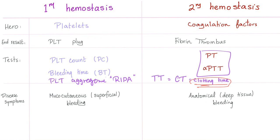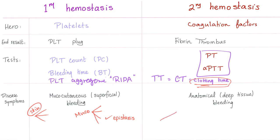What are the symptoms of a primary hemostasis defect? Mucocutaneous or superficial bleeding — such as petechiae, purpura, ecchymosis on the skin. On the mucosal side, you have easy bruising, gingival bleeding, epistaxis (which is by far the most common), and menorrhagia. For secondary hemostasis defects, you see deep tissue bleeding — bleeding into joints, into muscles, intracranial hemorrhage, and excessive bleeding after or during tooth extraction.